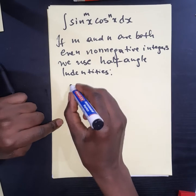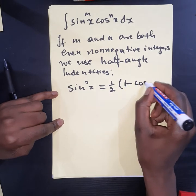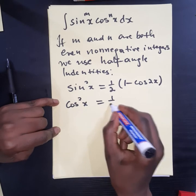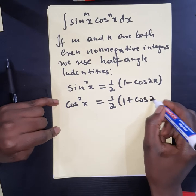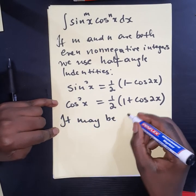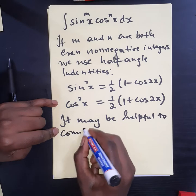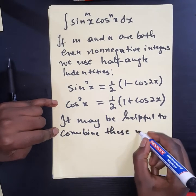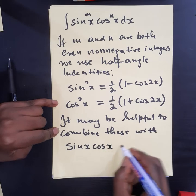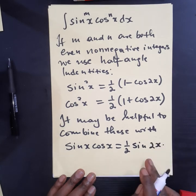Which ones? The first one will be sine squared of x equal to half times 1 minus the cosine of 2x. The second one is cosine squared of x equal to half times 1 plus the cosine of 2x. And then it may be helpful to combine these identities with the identity sine of x times the cosine of x equal to half the sine of 2x.